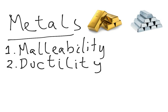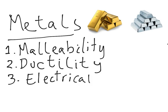The third property of metals is that they are able to conduct electricity — electrical conductivity. This means they are capable of carrying electrical current, like copper again.